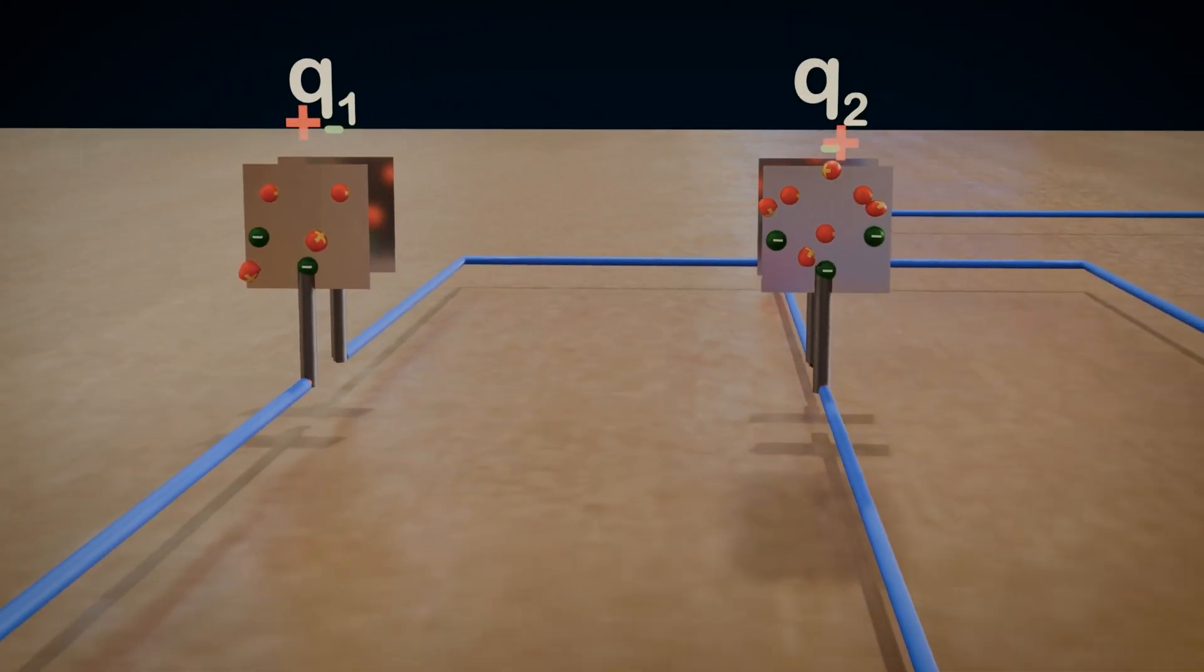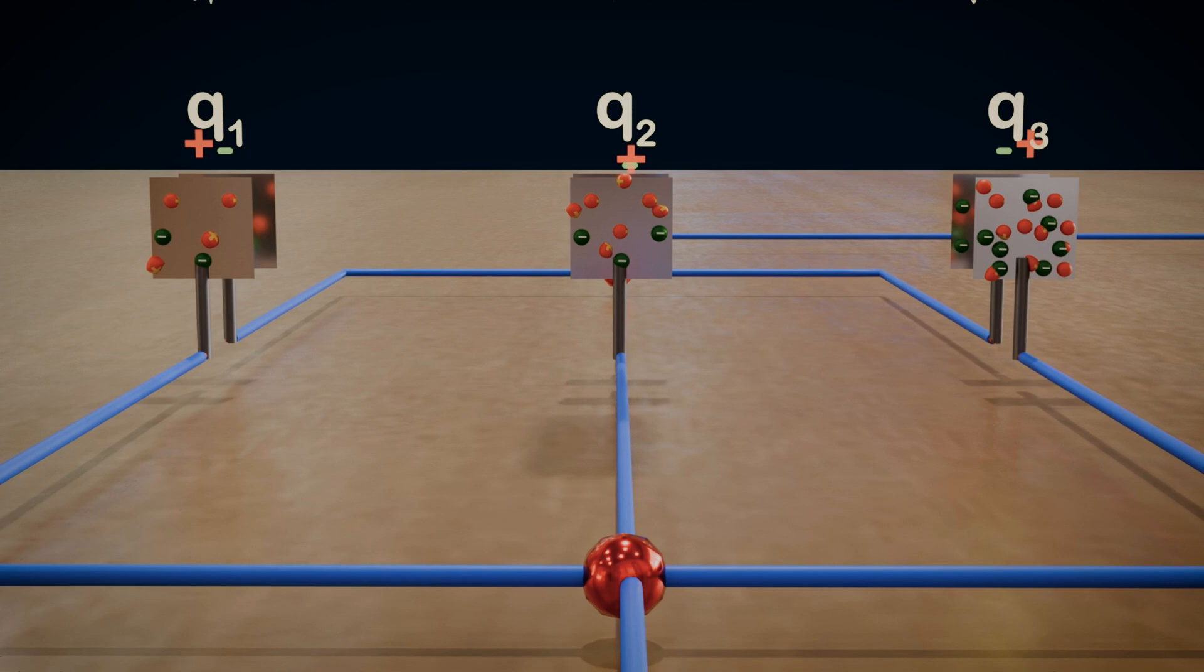So, here's the thumb rule. In a parallel combination, the voltage is the same across all capacitors, but the charge stored in each capacitor will vary depending on their individual capacitances.